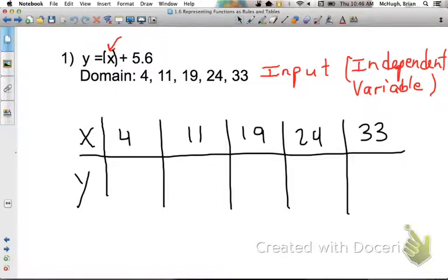If we put 4 in and add 5.6 to it, 4 plus 5.6 is going to get us 9.6. When we input 11 and add 5.6, our output is 16.6. Keep going here, 19 plus 5.6 is 24.6. 24 plus 5.6 is 29.6, and the last one, 33 plus 5.6 is 38.6.